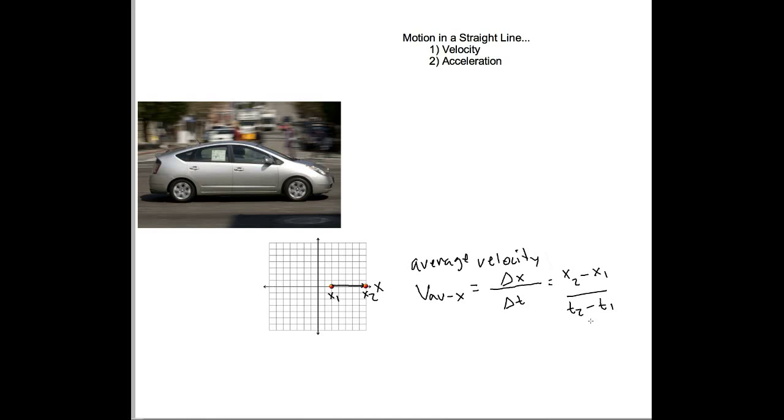Say our car started over here at 20 meters from the origin. So, x1 equals 20 meters. And x2, let's say it is 40 meters from the origin. And this all happens in 2 seconds. So, our time is 2 seconds. Well, our average velocity is going to be 40 minus 20, so 20 meters over 2 seconds, which would give you an average velocity of 10 meters per second. Pretty straightforward stuff.